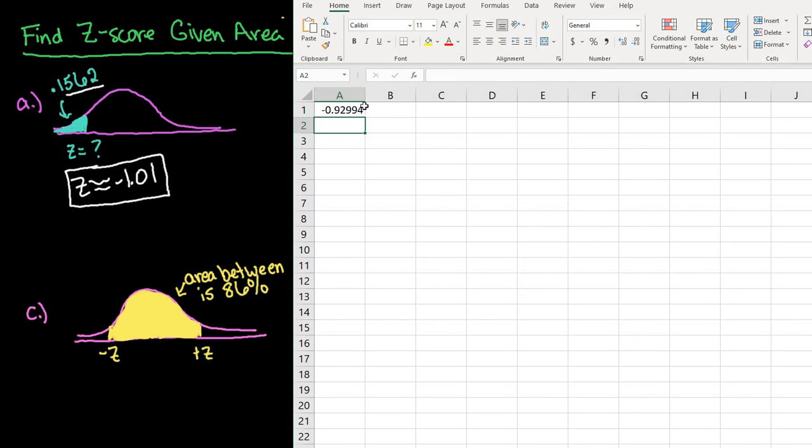And that's because the area to the left of the negative z-score is the same as the area to the right of the positive z-score. So you could have just put in that value and then reported the opposite z-score. So that would also give you the same answer.